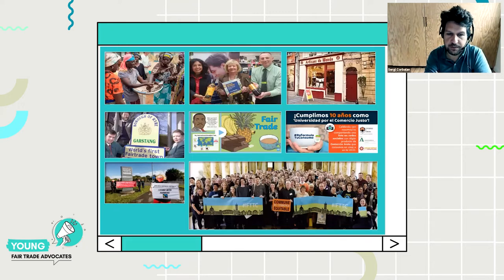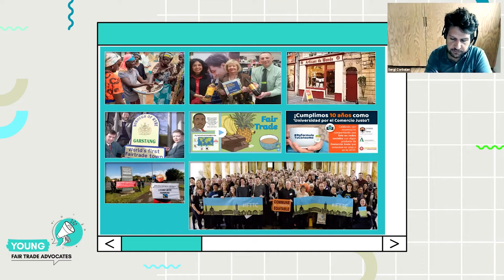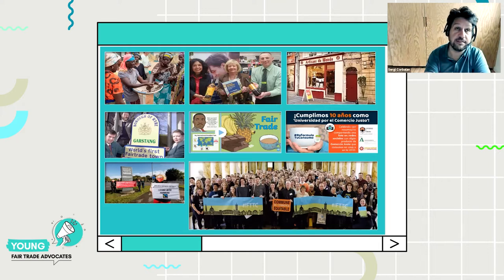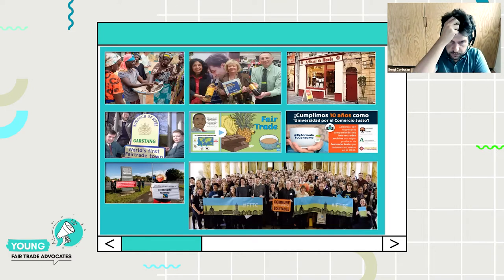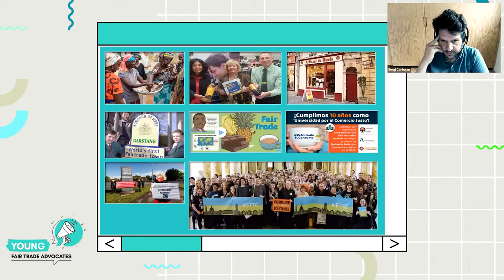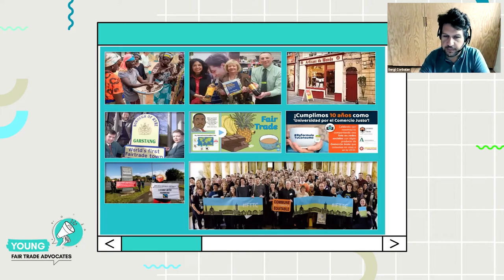There is also the fair trade towns movement — there are more than 2,000 fair trade towns in the world. This is a campaign of citizens asking cities and local authorities to commit to buying fair and promoting fair trade. We also have fair trade schools and fair trade universities, with growing numbers of schools and universities in the UK and Spain joining the fair trade movement.